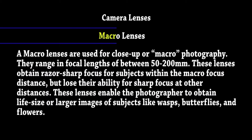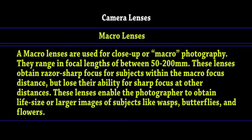Macro lenses are used for close-up or macro photography. They range in focal length between 50 to 200mm. These lenses obtain laser-sharp focus for subjects within the macro focus distance, but lose their ability for sharp focus at other distances. These lenses enable the photographer to obtain life-size or larger images of subjects like wasps, butterflies, and flowers.